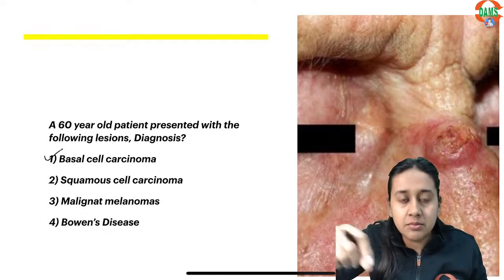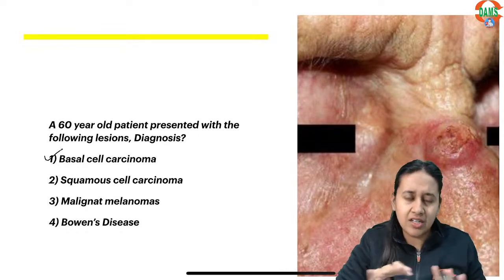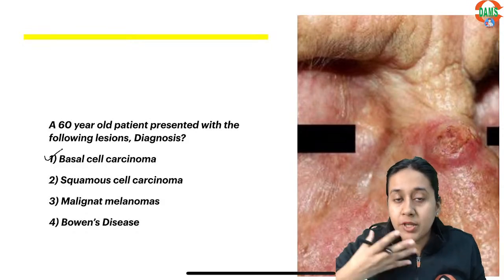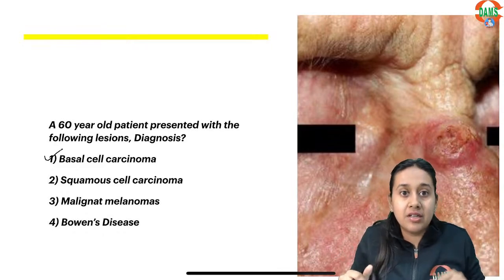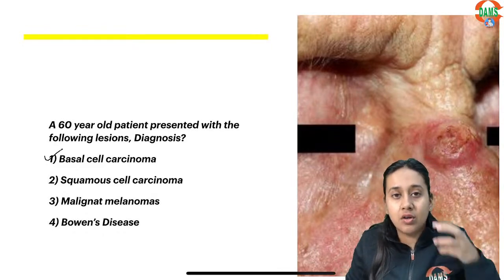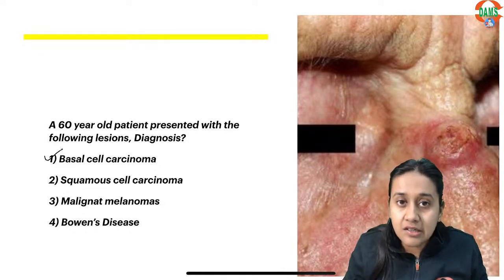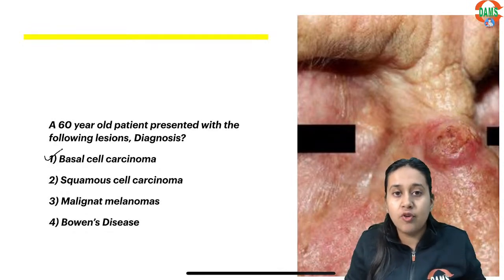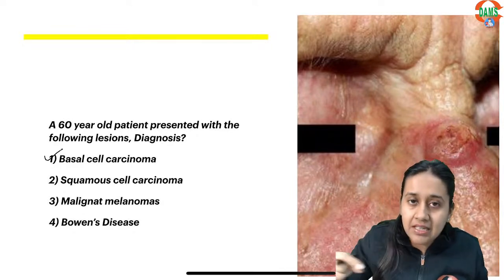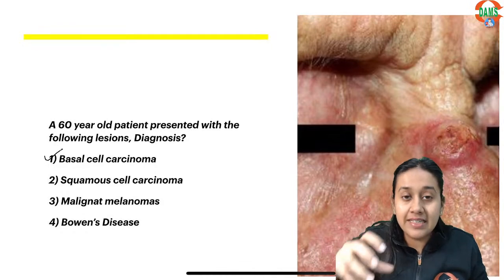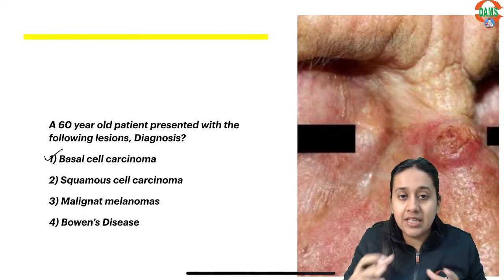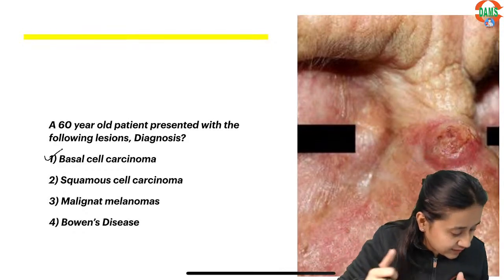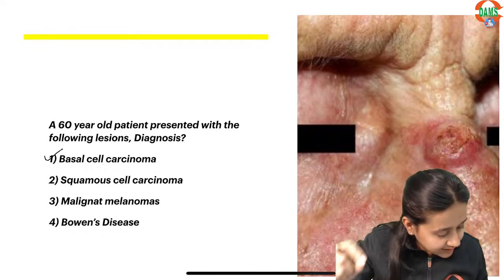A very similar question appeared in the last year's exam as well. Basal cell carcinoma is a frequently repeated topic — it is the most common cutaneous malignancy, and the commonest trigger is sunlight, so lesions of BCC are usually seen on the face. It starts as a nodule with associated telangiectasia, which slowly ulcerates to form a classical rodent ulcer with beaded rolled-out margins. This tumor is locally invasive and does not metastasize through blood or lymphatics, which is why it is called a rodent ulcer.